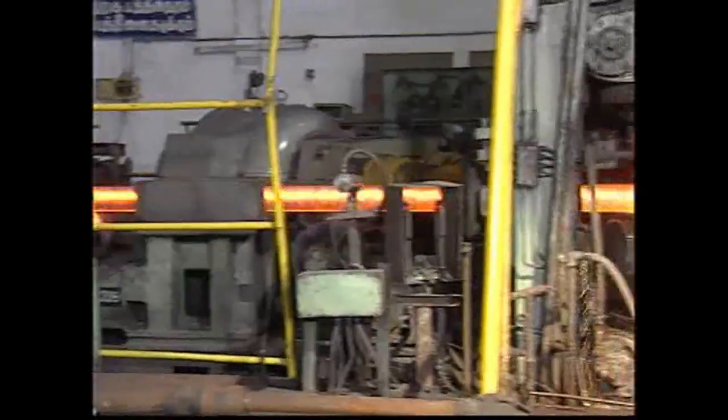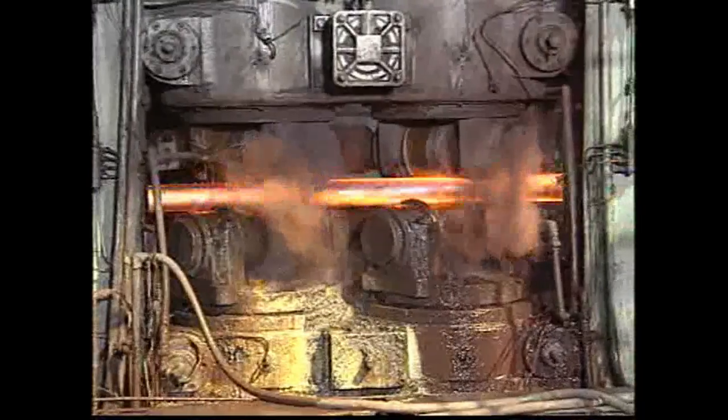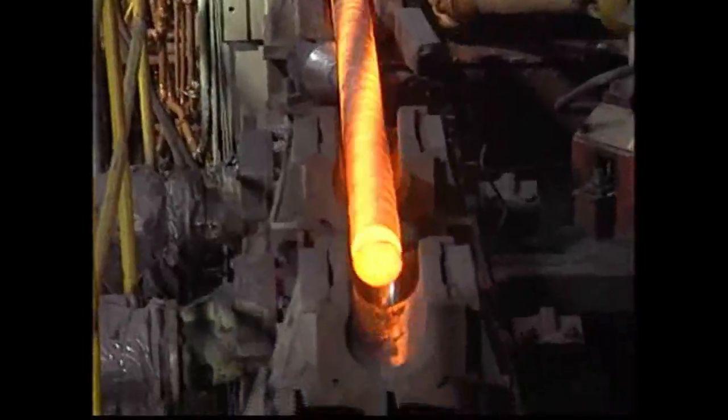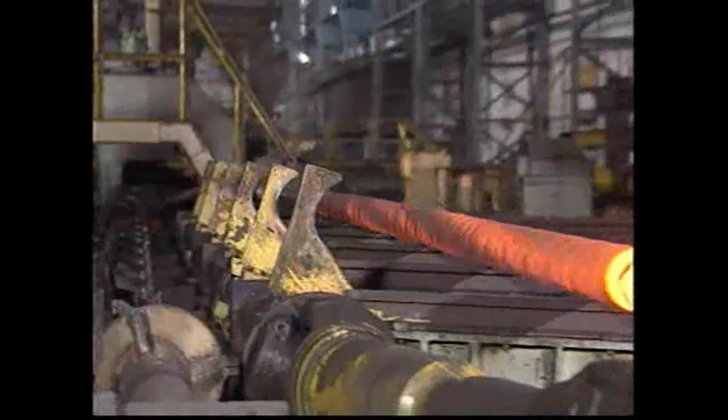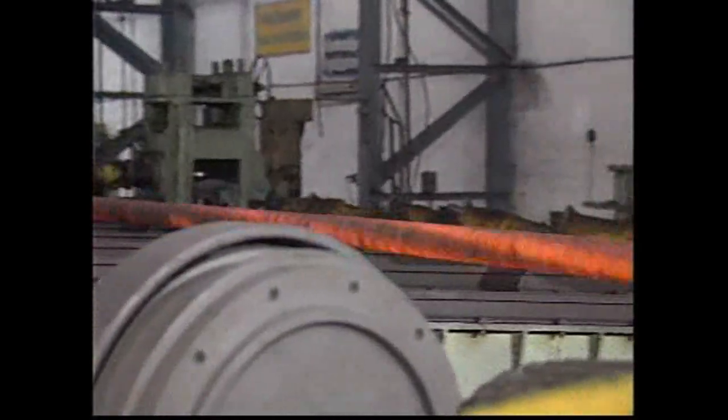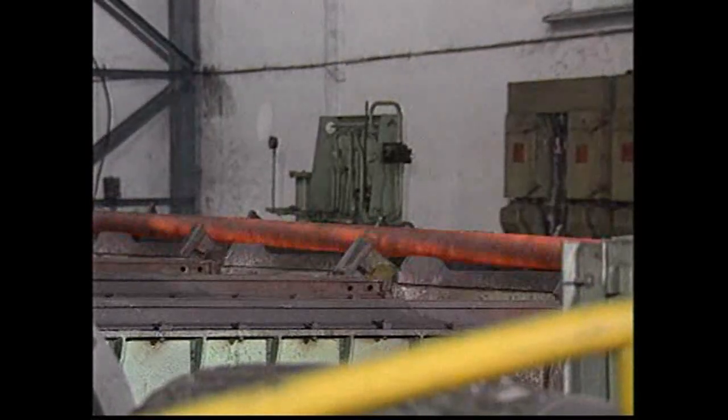The four-roll reeler loosens the shell over the mandrel and an extractor separates the shell from the mandrel. BHEL SSTP has successfully adopted LPG for heating applications.